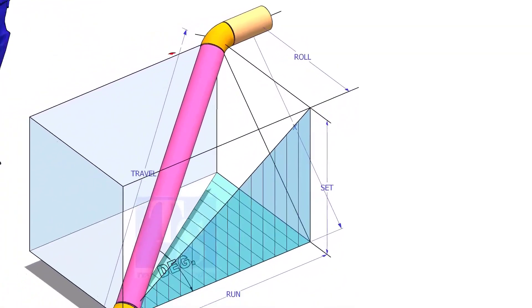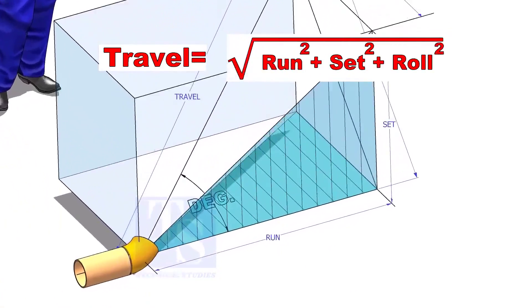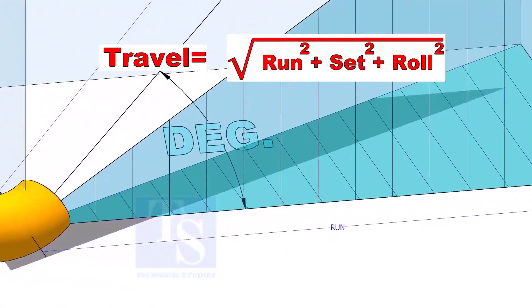The formula to calculate the travel length is the square root of run squared plus set squared plus roll squared.